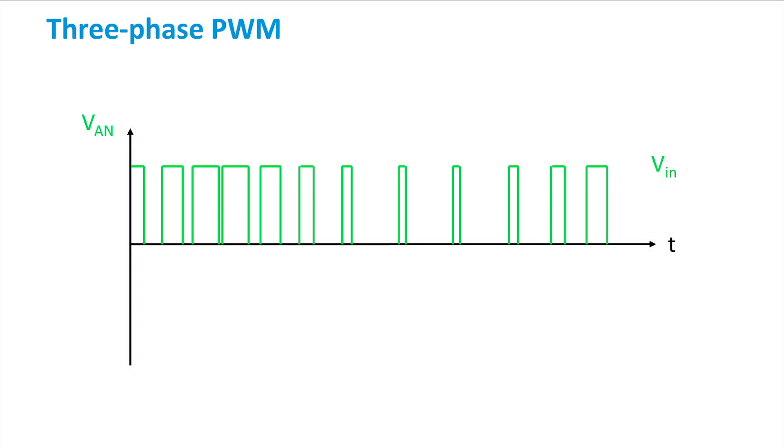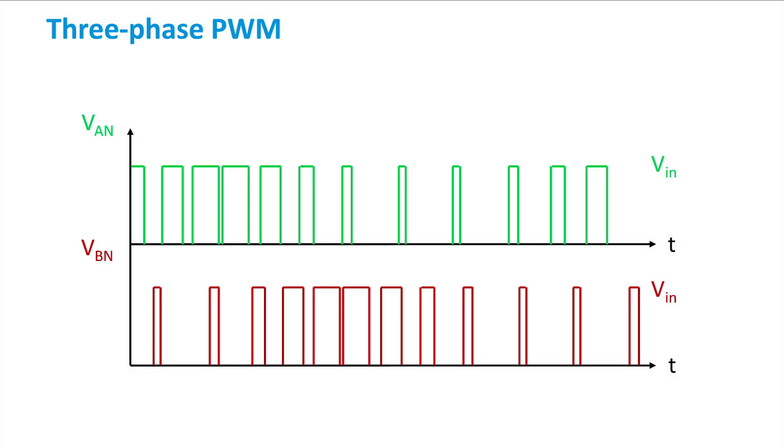Let's take, for example, the voltage A with respect to a neutral point N. As expected, the signal varies between the input voltage value and zero. Comparing now the second phase B to the reference signal, another output is found.